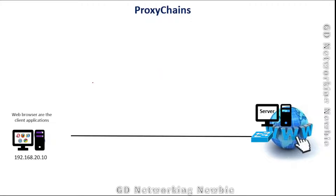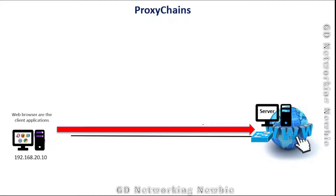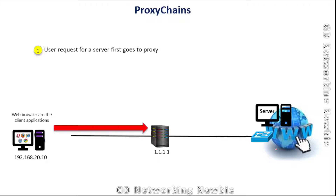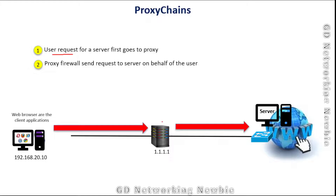When we visit some website or connect with some server, our request goes directly to the server, and at the server our IP can be seen — it means we are visible, our identity is there. In some situations, if we want to hide our identity, we can use proxies. Our request first goes to a proxy, and then the proxy sends the request to the server on behalf of the user. The server can see the proxy's IP address, but not our own IP address.